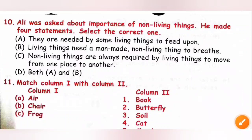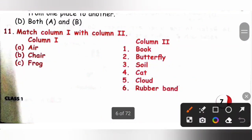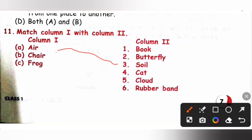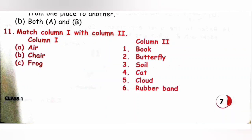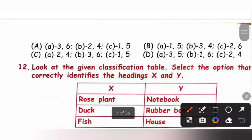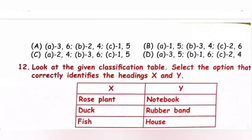Question 11: Match column 1 with column 2. Column 1 lists: A — natural non-living thing, B — man-made non-living thing, C — natural living thing. Soil and cloud are natural non-living things, so A matches 3 and 5. Chair, book and rubber band are man-made non-living things, so B matches 1 and 6. Frog is a natural living thing, so C matches 2 and 4. Option D is the correct answer: A-3,5; B-1,6; C-2,4.